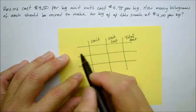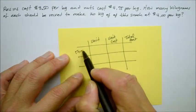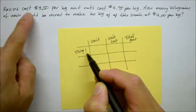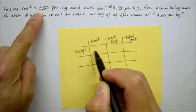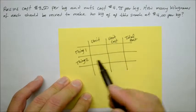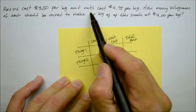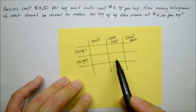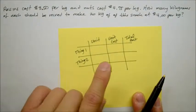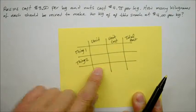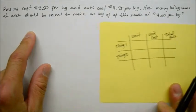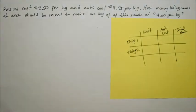And on the left column, we put down thing one. In this case, the thing one will be the raisins and its price for each kilogram that goes over here. And then thing two. In this case, the thing two will be referred to as the nuts that cost $4.75 for each kilogram. So we're going to use this chart always to set up the mixture problem.